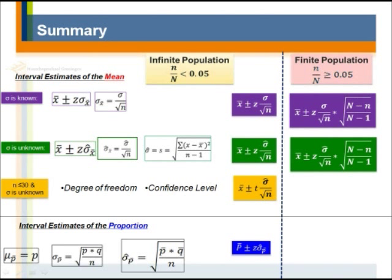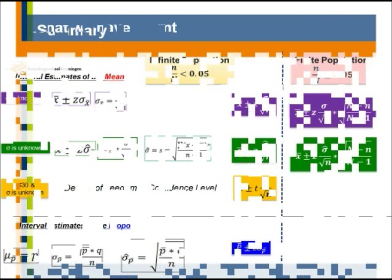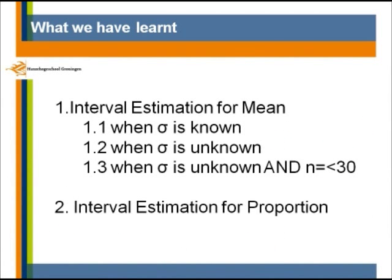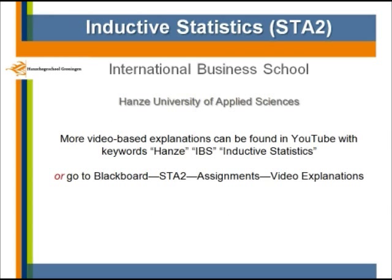This is what we have learned today: the distinction between infinite and finite population, interval estimation when we know the population standard deviation, when we don't know it, and when the sample size is smaller than 30, as well as how to calculate interval estimates for the mean and for the proportion. This course is given by the International Business School, Hanse University of Applied Sciences. For more video-based explanations, search YouTube with keywords 'Hanse IBS Inductive Statistics' or go to Blackboard, course STA2, under the assignments category. Thanks for watching.